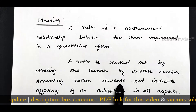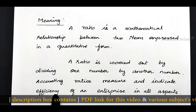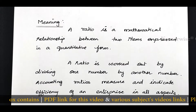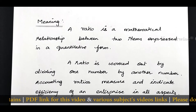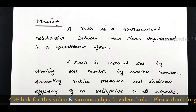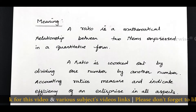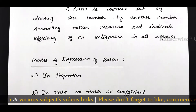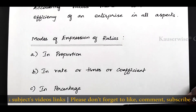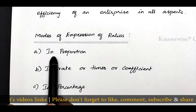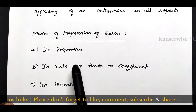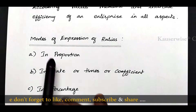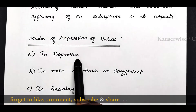Accounting ratios measure and indicate the efficiency of an enterprise in all aspects. Ratio analysis is a tool to analyze and interpret the financial statement. Here we have different modes of expression of ratios. Ratios can be expressed in any one of the forms. The first one is in proportion — for example, 1 is to 2, or 3 is to 2.